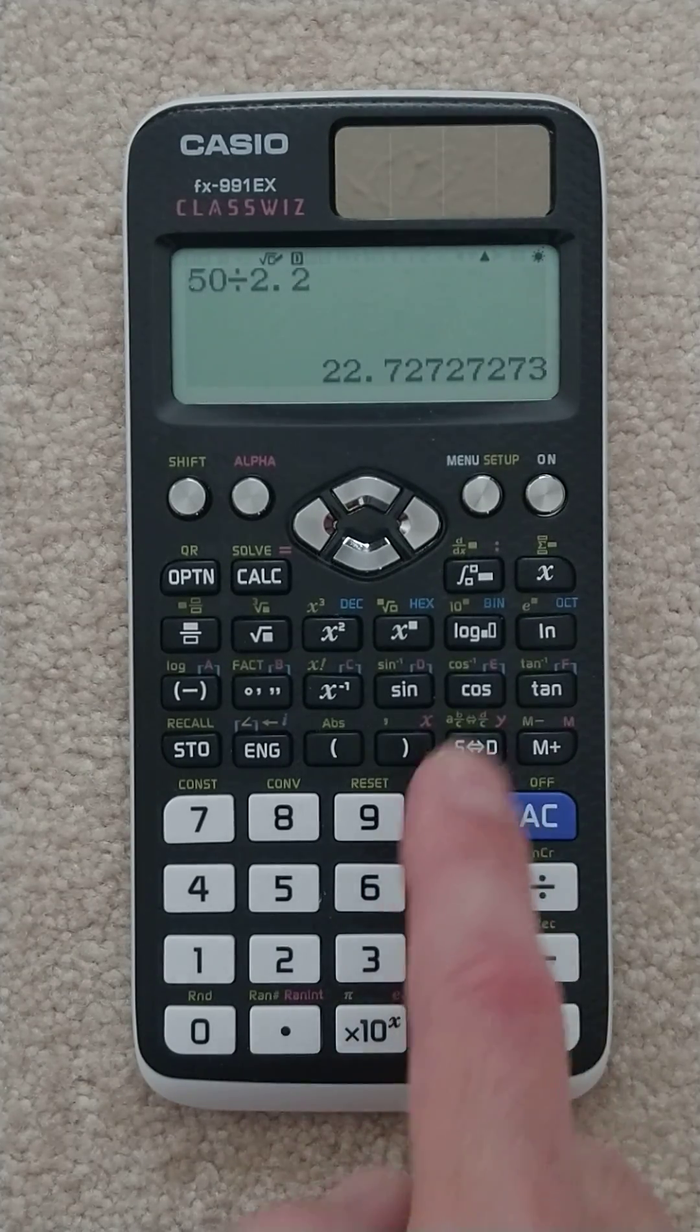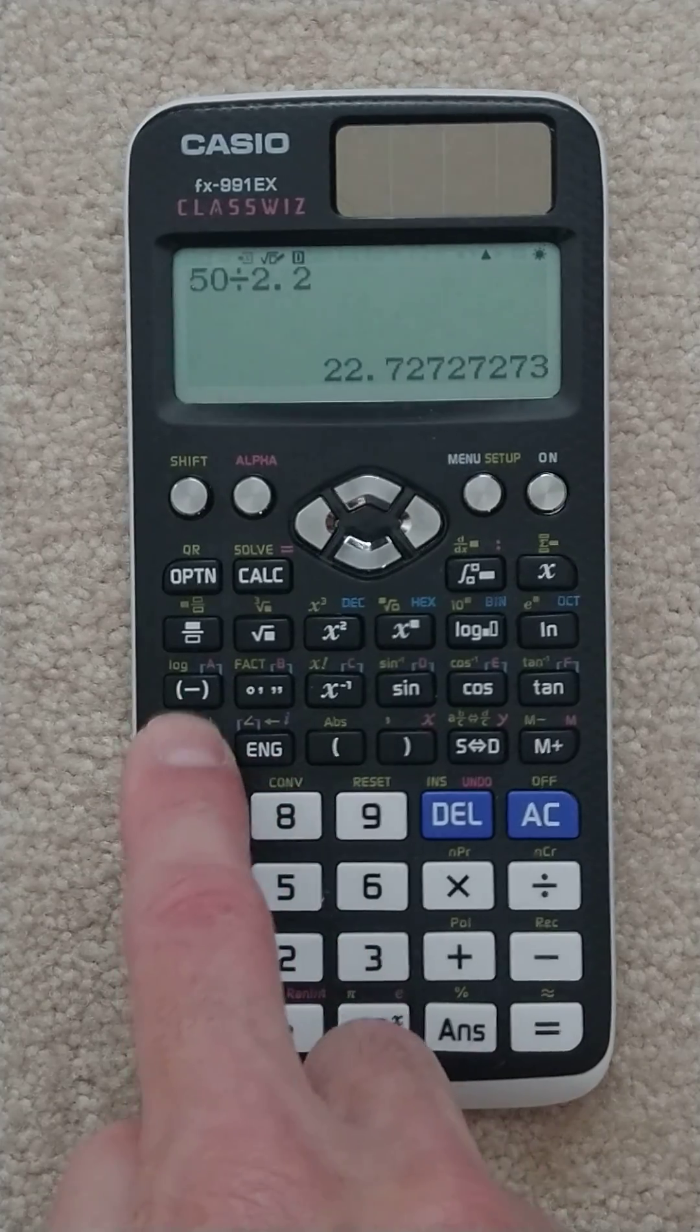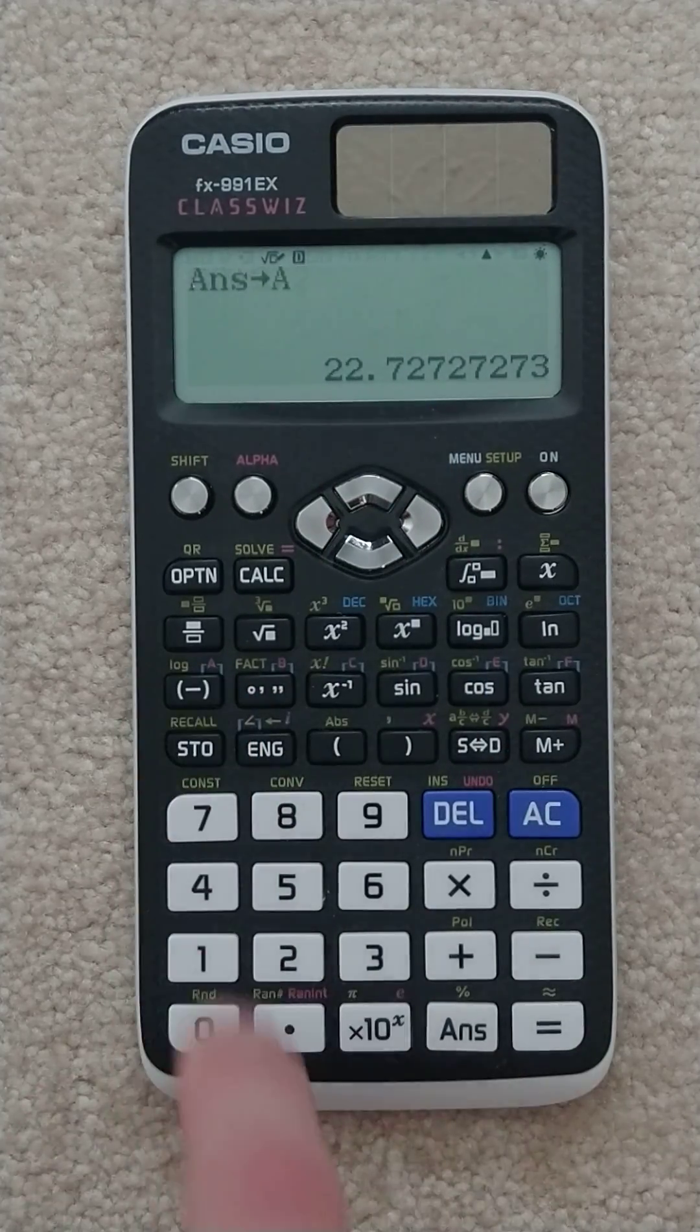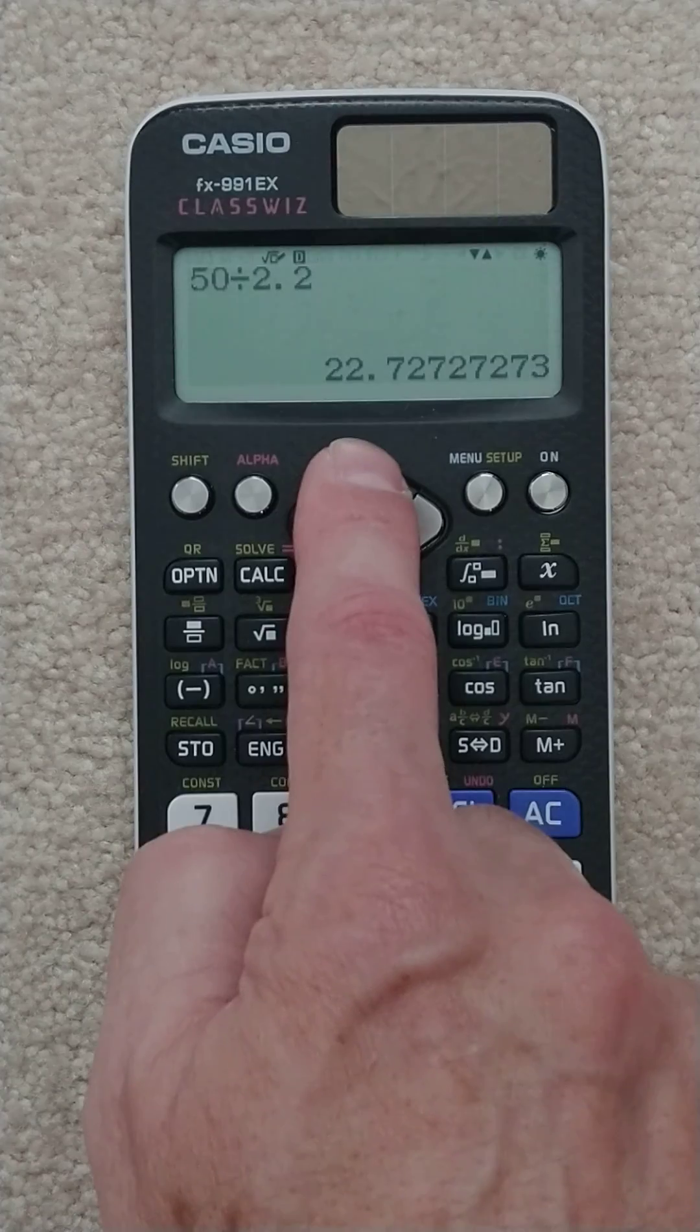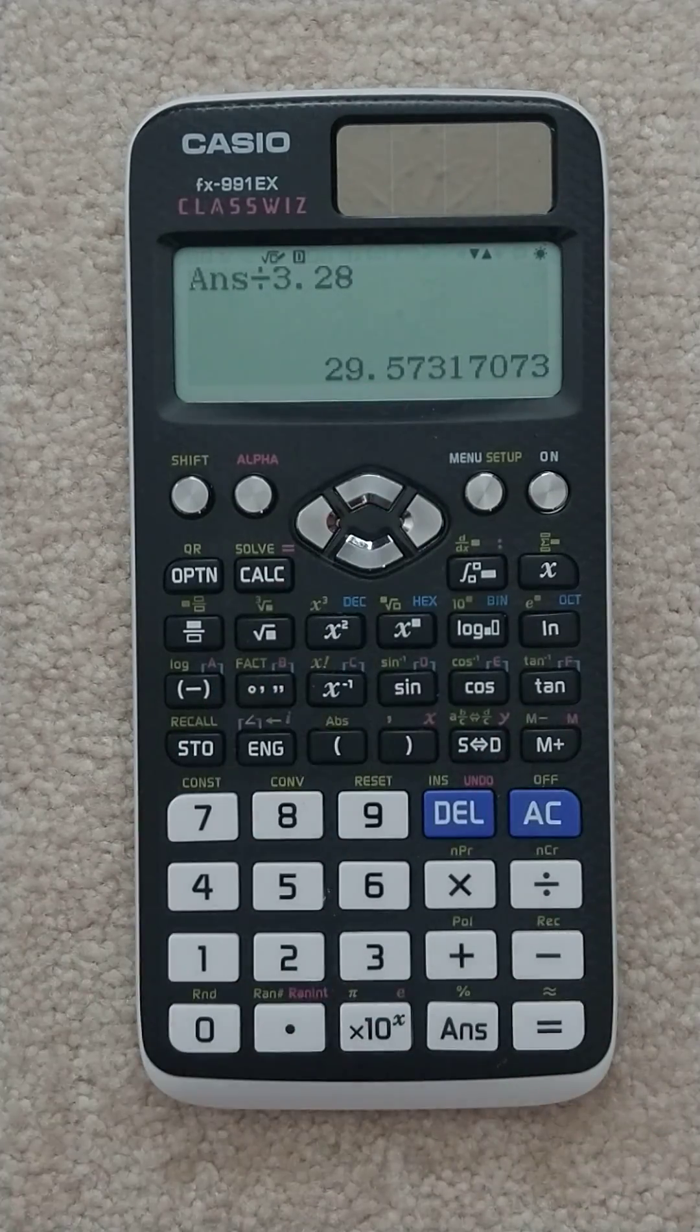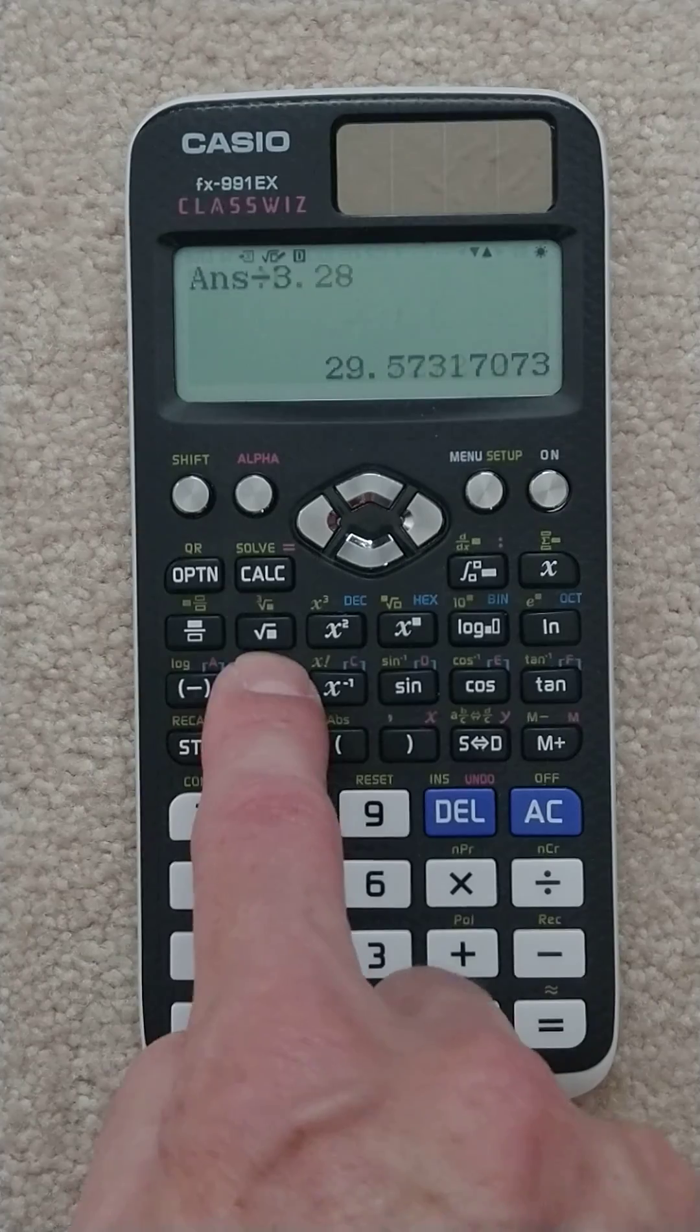We realize we should have stored these values. So let's store this one into A. Got it. Now let's go up and store this one, our velocity, into B. Store B. That's weird.